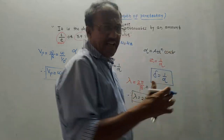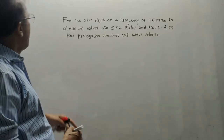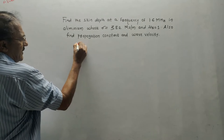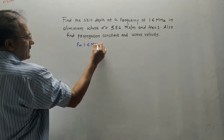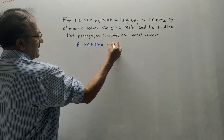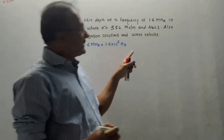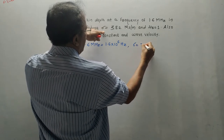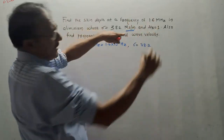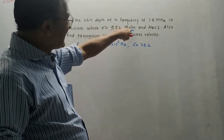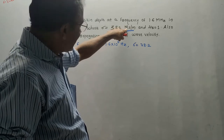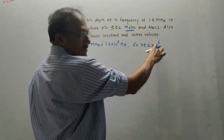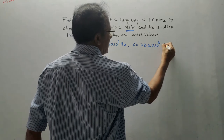We will solve a numerical to get an idea of this concept. Find the skin depth at a frequency of 1.6 megahertz. The given frequency f is 1.6 megahertz, which is 1.6 times 10 raised to 6 hertz. In aluminum, whose conductivity sigma is 38.2 mega-siemens per meter — that is 38.2 times 10 raised to 6 siemens per meter. The relative permeability mu_r is given as 1. Also find the propagation constant and wave velocity.